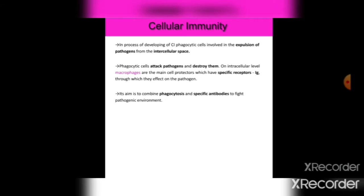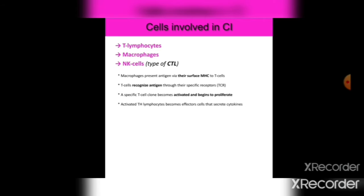In the process of developing cellular immunity, phagocytosis is involved in the expulsion of pathogens from the intracellular space. Phagocytic cells attack pathogens and destroy them at the intracellular level. Macrophages are the main protector cells, which have specific IgE receptors through which they act on the pathogen, combining phagocytosis with specific antibodies to fight pathogenic environments. Cells involved in cellular immunity include T lymphocytes, macrophages, and NK (natural killer) cells.